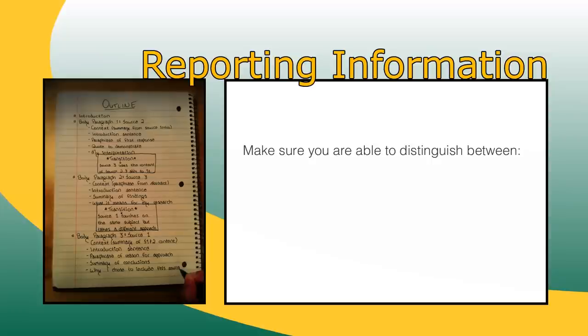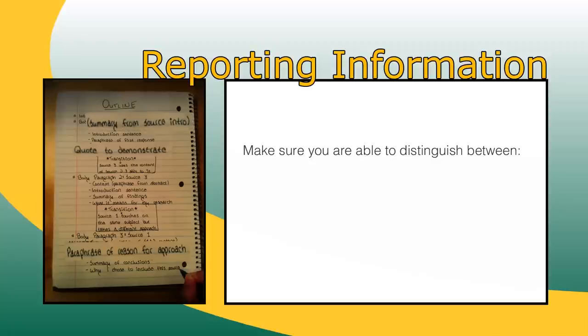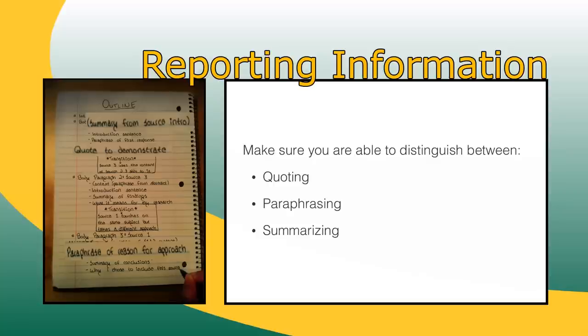Whether you are contextualizing a source or reporting its content, make sure you are intentional about when to quote, paraphrase, or summarize. Remember that quotes should be used only when different wording would not carry the same weight. Paraphrasing is useful for specific details that you can report in your own words. Summarizing lets you give a very general overview of some aspect of an article's content, and this is a great tool when contextualizing the content of a source.